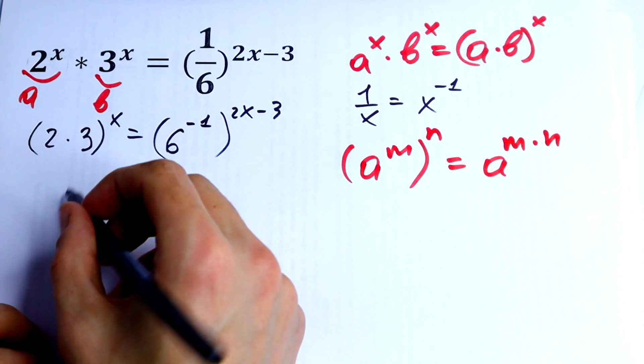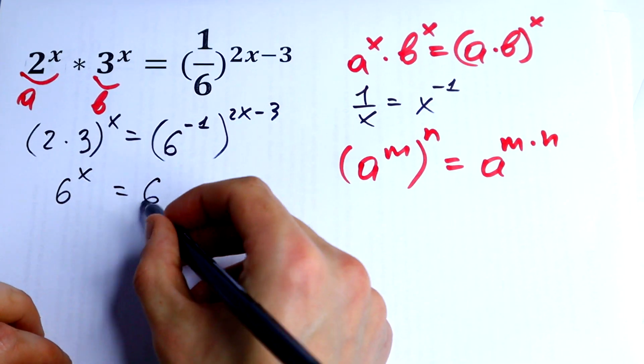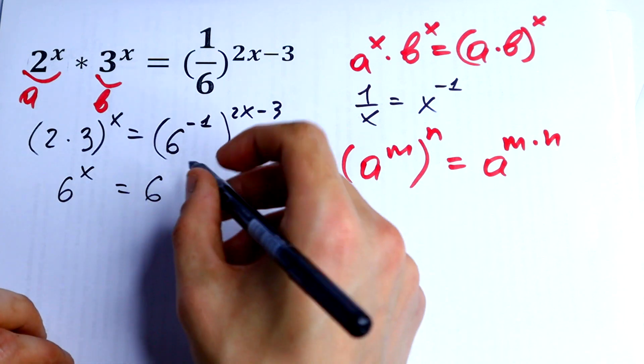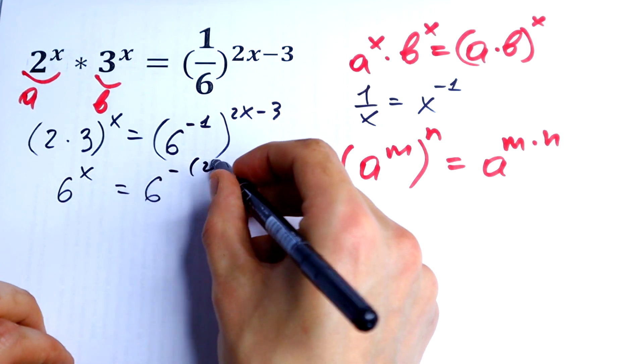So 6^x equals 6^(-(2x-3)), which simplifies to 6^x equals 6^(-2x+3).